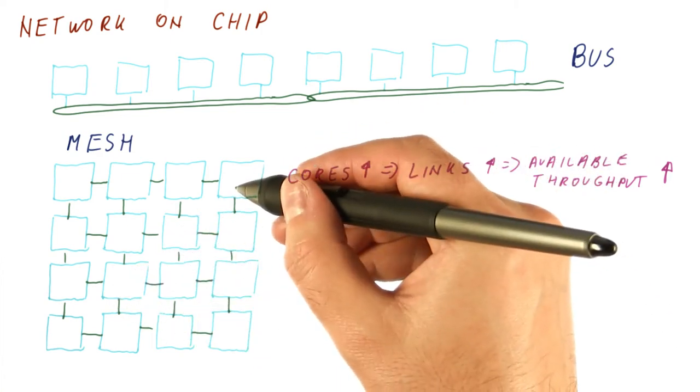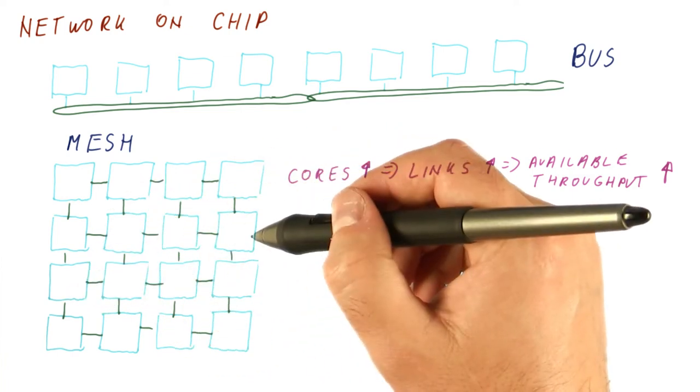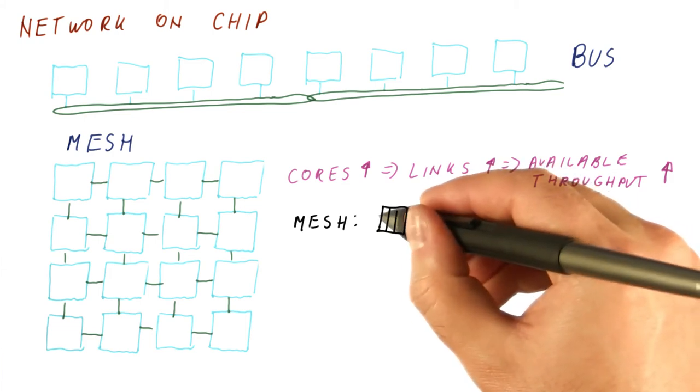But we can build chips with some amount of links crossing each other. And thus, we can have a mesh, which is kind of like what we have seen.